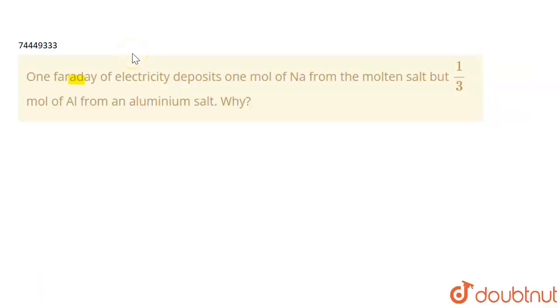The question is: one faraday of electricity deposits one mole of Na from the molten salt, but one by three moles of aluminum from an aluminum salt. Why is this happening here?